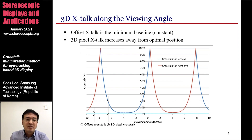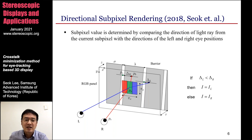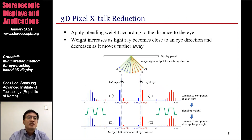In 2018, we proposed a directional surface rendering method for eye-tracking based 3D display. In our method, each subpixel value is determined by comparing the direction of the light ray from the current subpixel with the directions of the left and right eye positions. At the barrier plane, we calculate the horizontal distance delta L and delta R from the projected eye position to the closest barrier opening. If delta L is smaller than delta R, it means that the light ray from the current subpixel is close to the left eye, and we assign the left image content as the current pixel value.